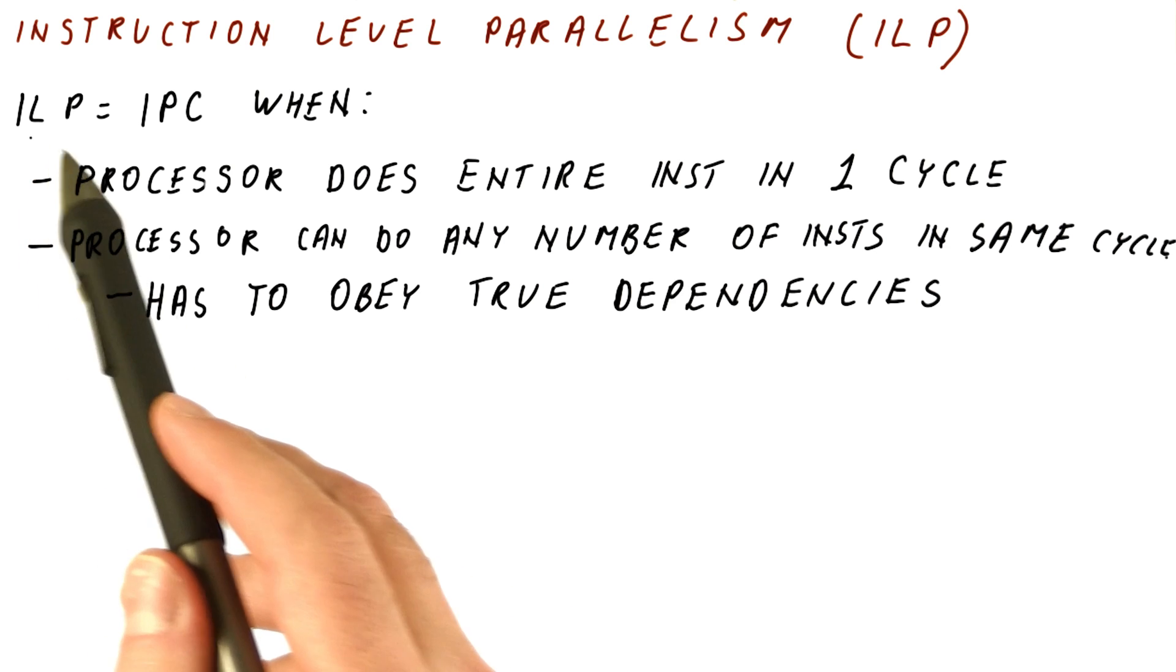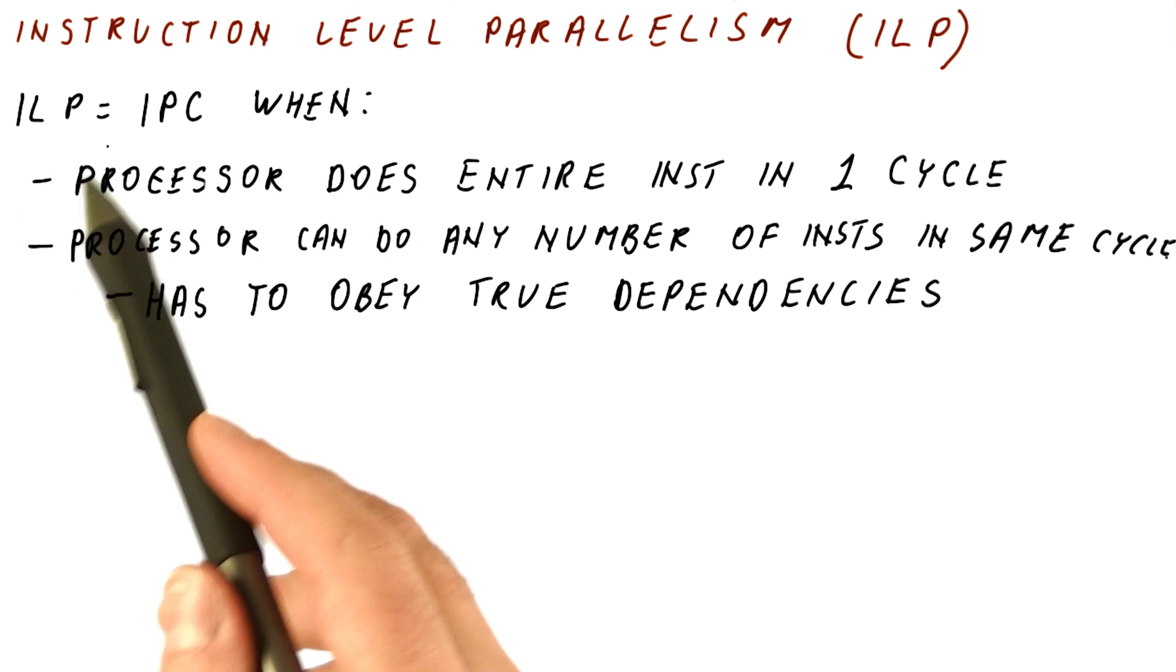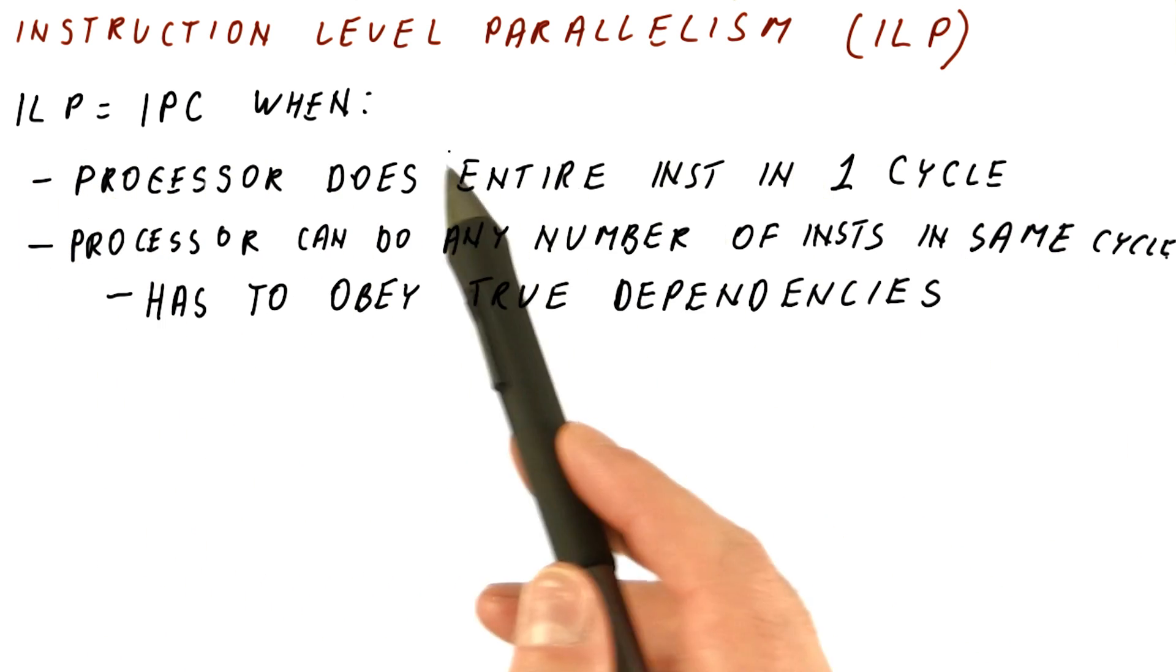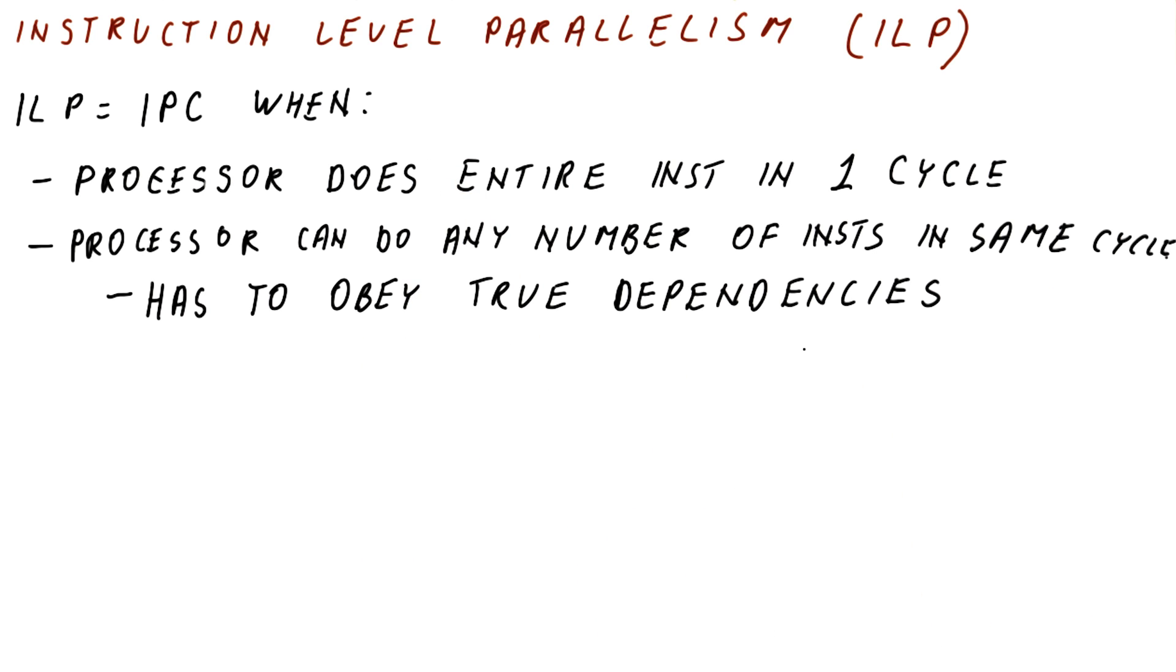So as you can see, ILP really is kind of what an ideal processor can do, subject only to obeying true dependencies.